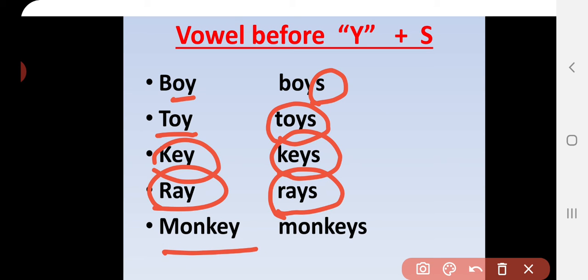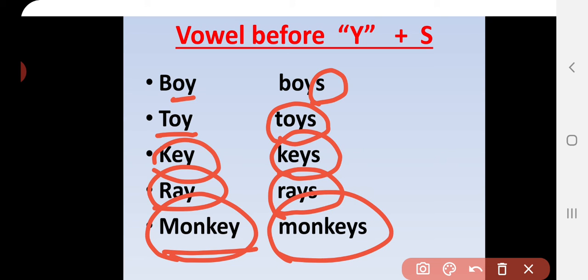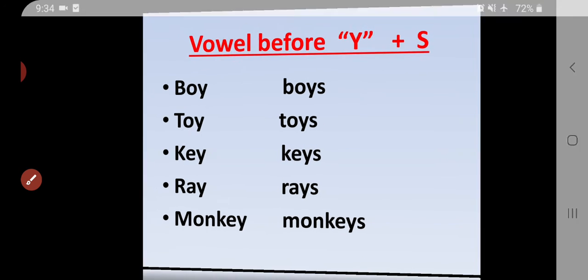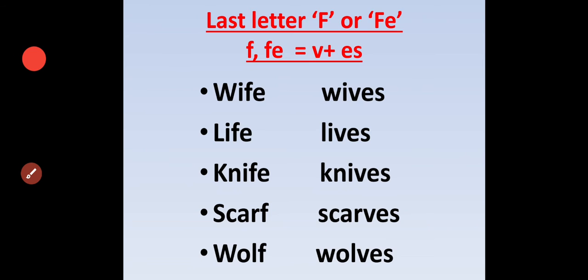Many children make a mistake with monkey. They write M-O-N-K-E-I-E-S, removing Y and adding IES. But that is wrong. Monkey ends in EY — before Y is E, which is a vowel. So we should only add S — monkey becomes monkeys.